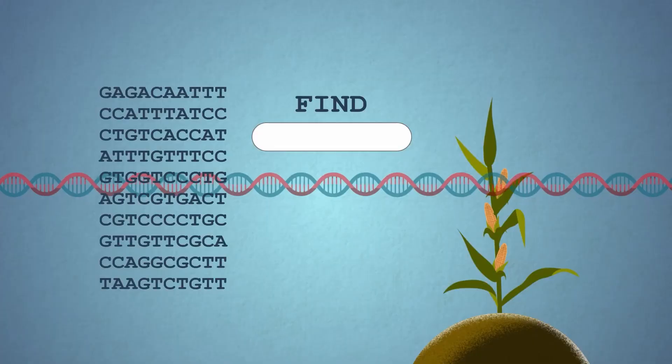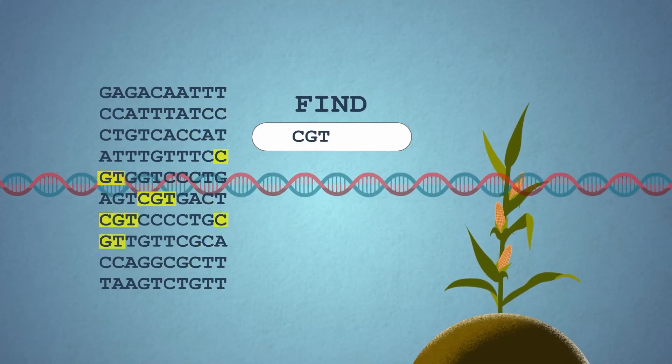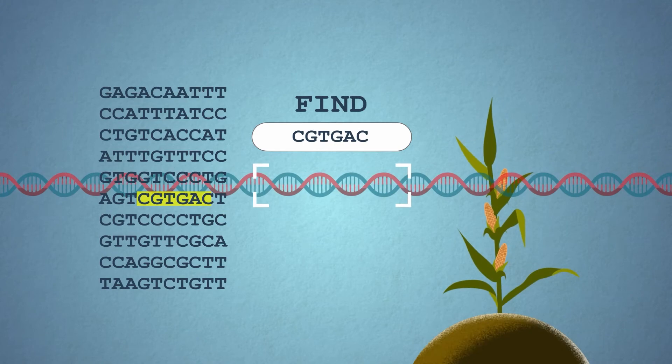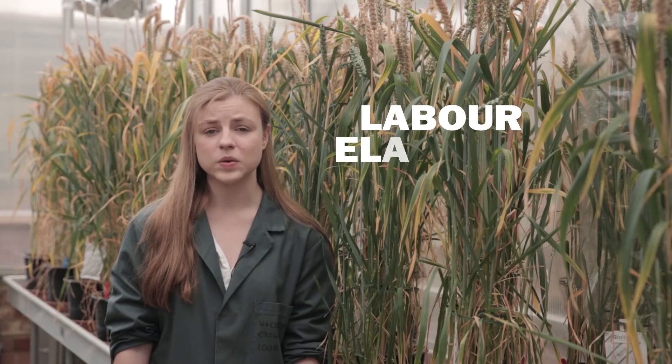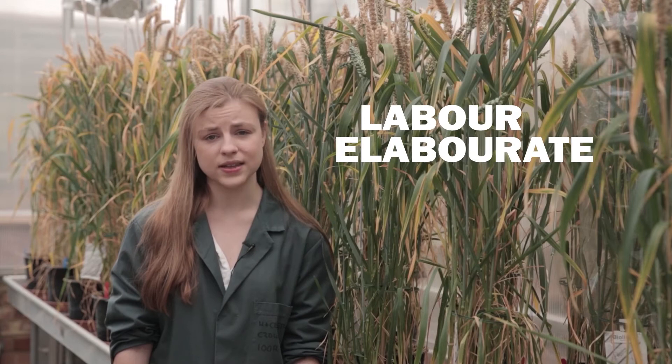In genome editing, we use a thing called a guide RNA. This is like using find and replace in Microsoft Word. We could use find and replace to search for the word 'labor' with the American spelling and change it to the English spelling with a U. But an unintended consequence of this would be changing the word 'elaborate' to 'elaboraute' at the same time.